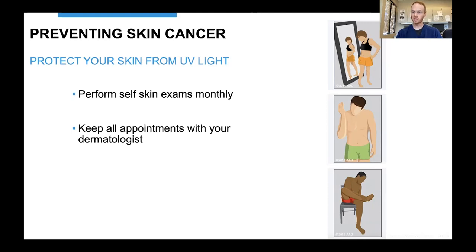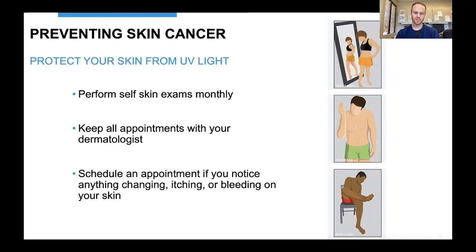Keep all appointments with your dermatologist. Once a patient has had one skin cancer, the risk of developing a second or more goes way up. If you've had a skin cancer, you should be seen by a dermatologist at least once a year — sometimes more — to monitor for recurrence and to check for new skin cancers elsewhere. And always schedule an appointment if you notice anything changing, itching, bleeding, or anything that looks a lot different from your other spots on your skin.